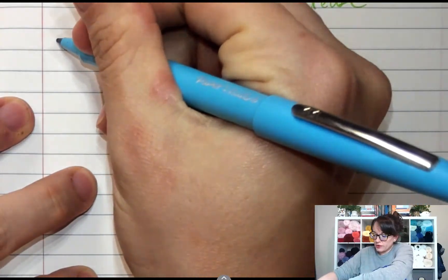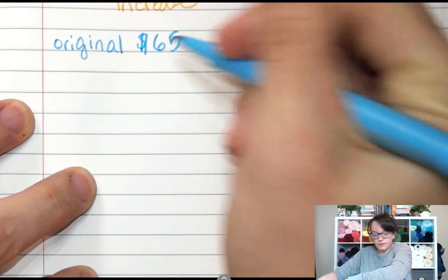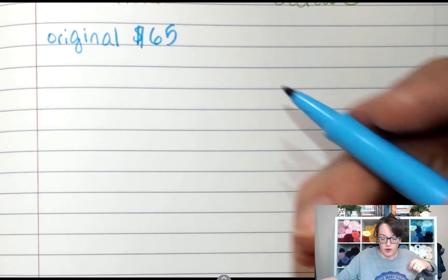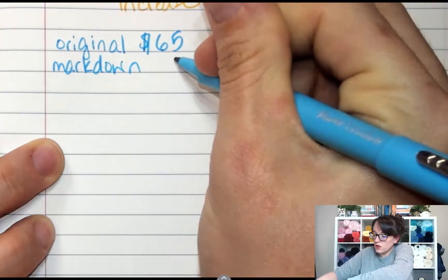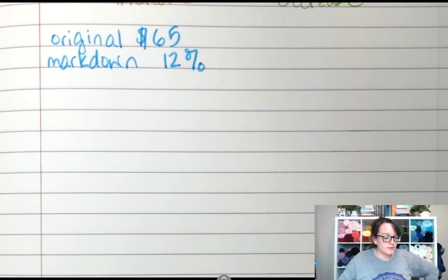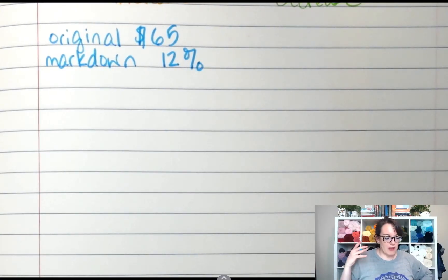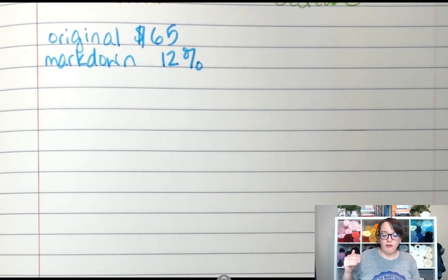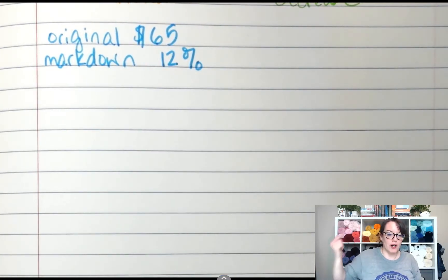So if I know that my original is $65 and I'm going to mark down this price 12 percent, and my task is to find that new price, I want to find the new price. So when I set up my proportion, instead of putting the difference over the original, I know the percent. I know the original. I'm looking for the difference part.